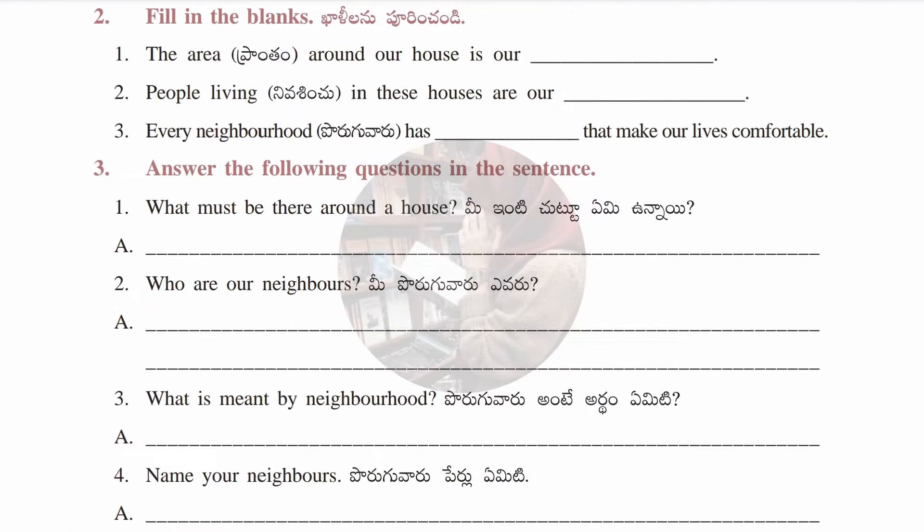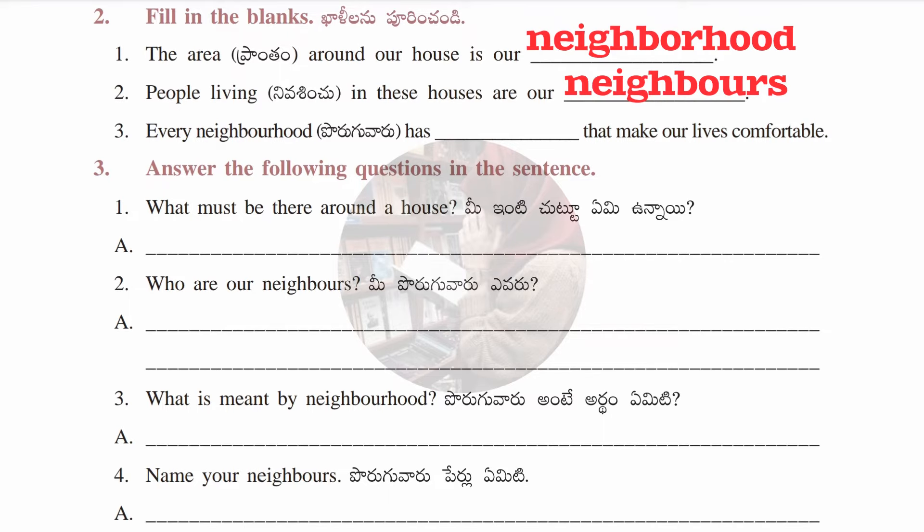Moving to the second section of the same worksheet — fill in the blanks. First: the area around our house is our neighborhood. Second: people living in these houses are our neighbors. Third: every neighborhood has certain facilities that make our lives comfortable.